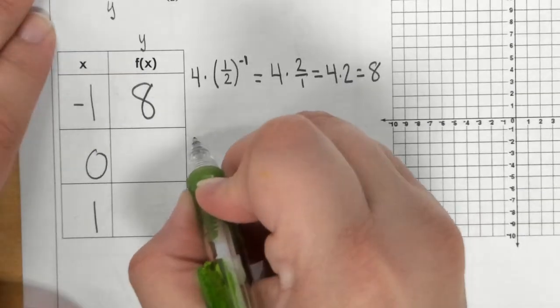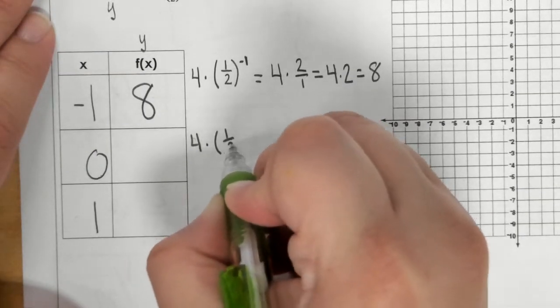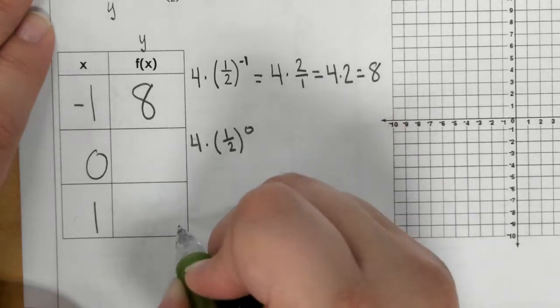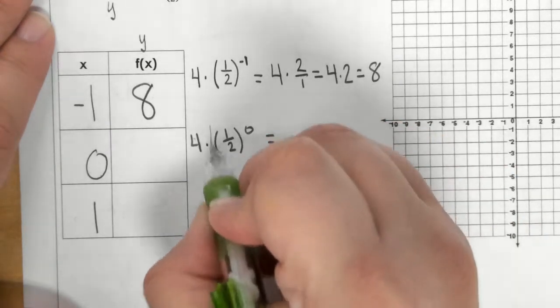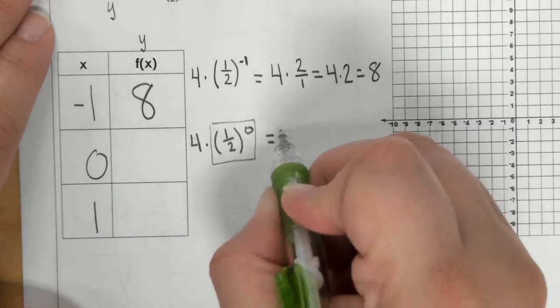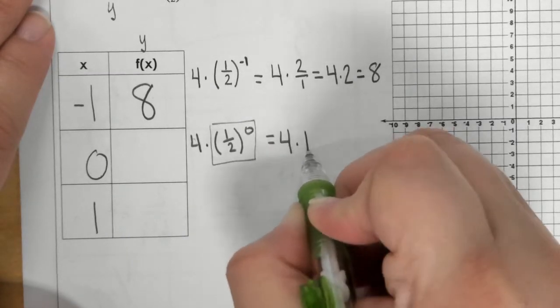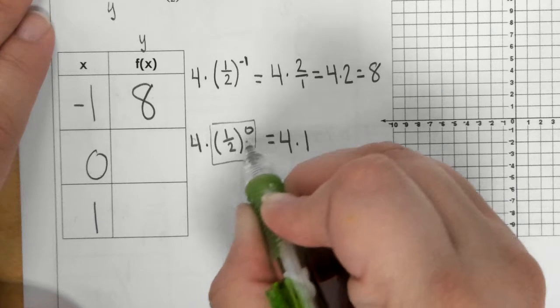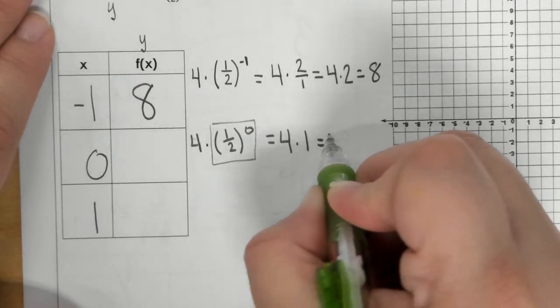Then we plug the 0 in. So, 4 times 1 half to the 0 power. Well, this whole thing is to the 0 power. So 1 half to the 0 power means that you have 4 times 1. This becomes a 1 right here. And 4 times 1 is 4.